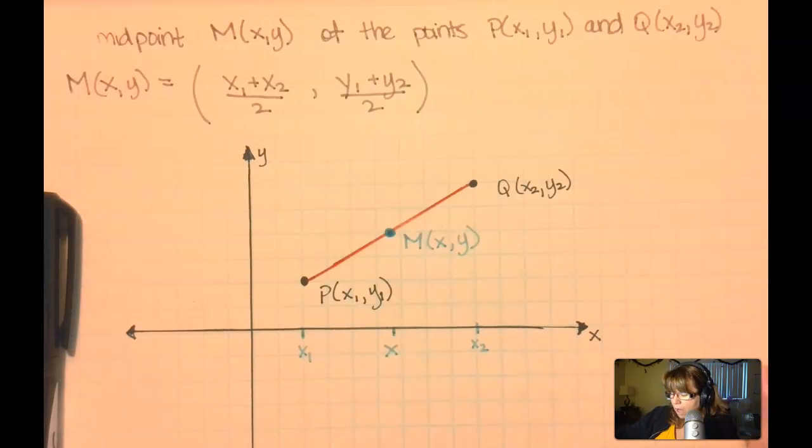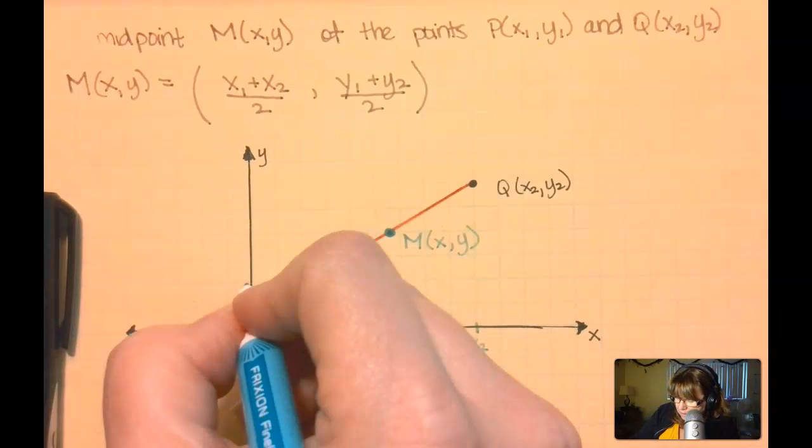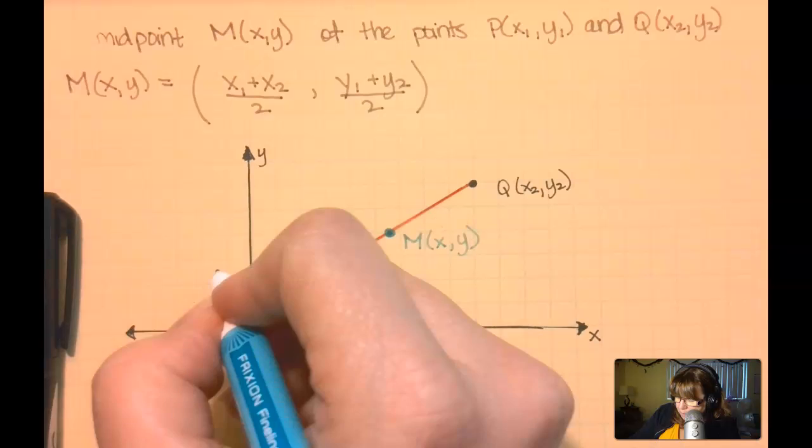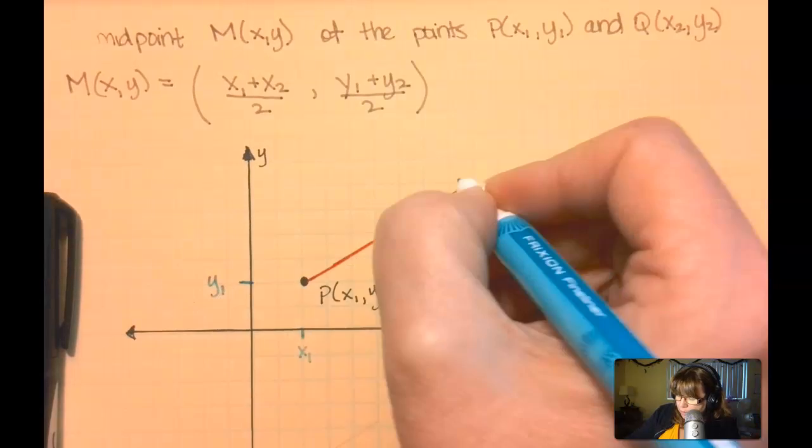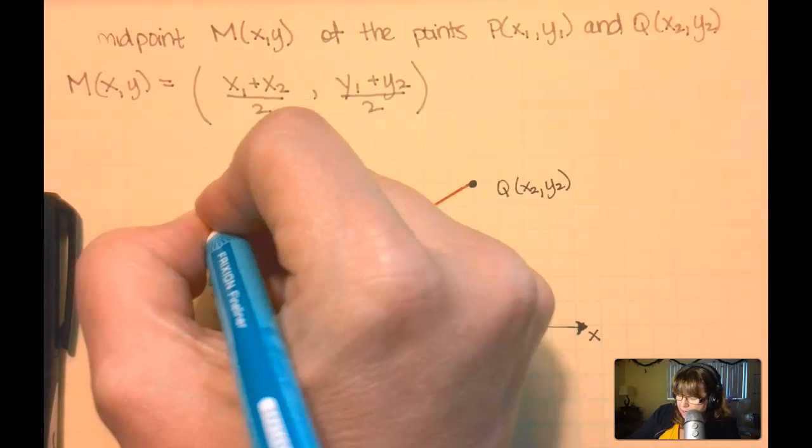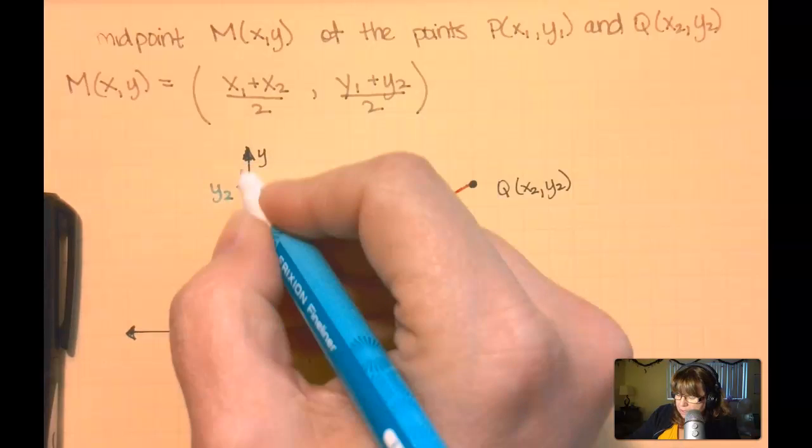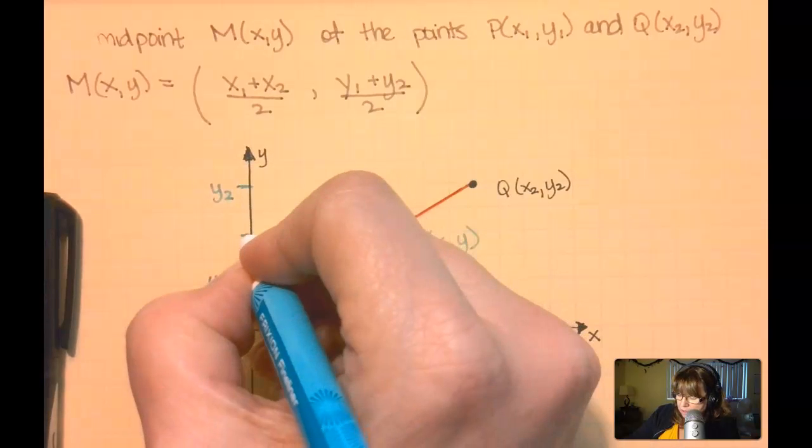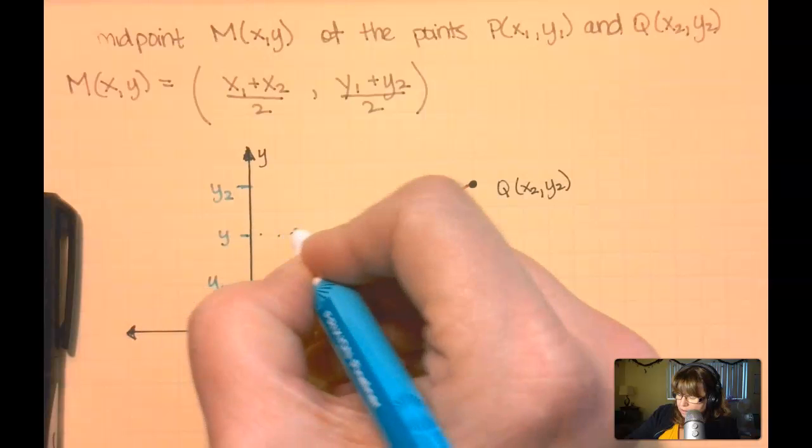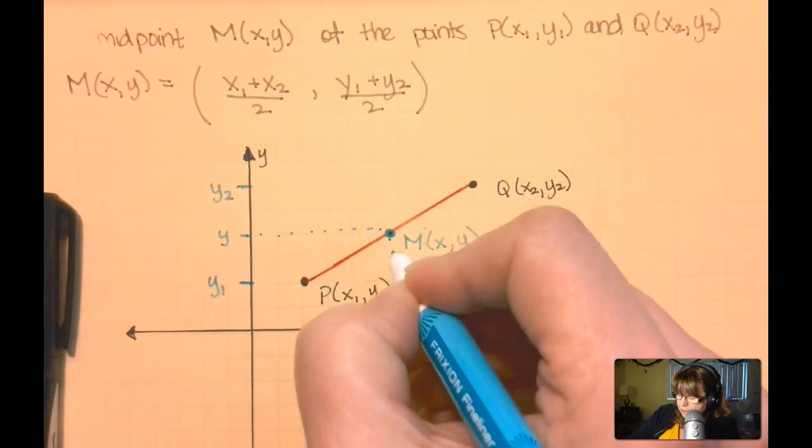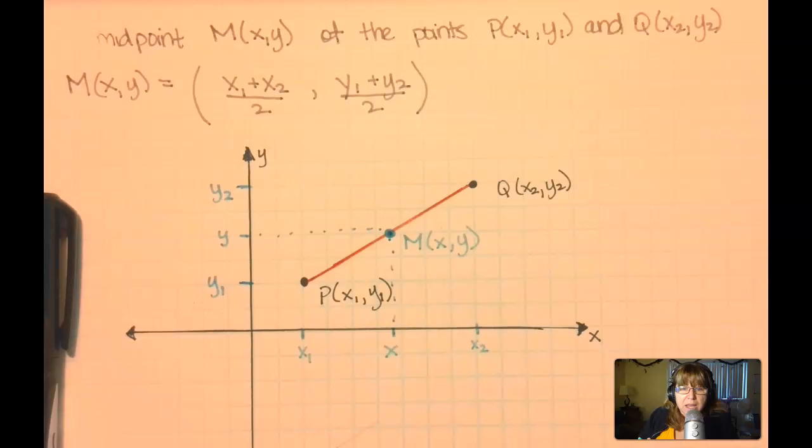Same thing with my y's, that's going to be my y1, and that goes up to y2. And if I find the middle point between here, turns out it's right there, I find my midpoint.